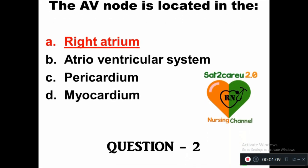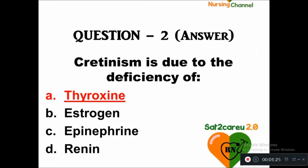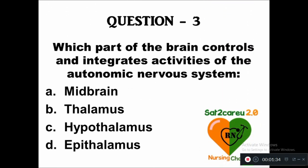Question 2: Cretinism is due to the deficiency of — option A: thyroxine, B: estrogen, C: phenephrine. The right answer is thyroxine. Cretinism is a congenital iodine deficiency disorder. Question 3: Which part of the brain controls and integrates activities of the autonomic nervous system — option A: midbrain, B: thalamus, C: hypothalamus, D: epithalamus.